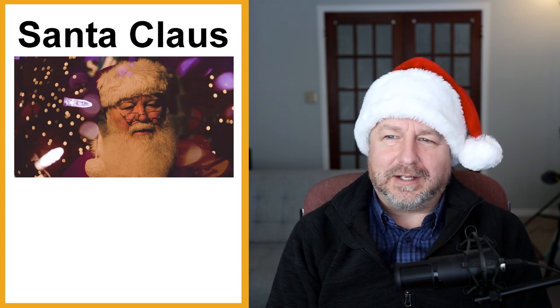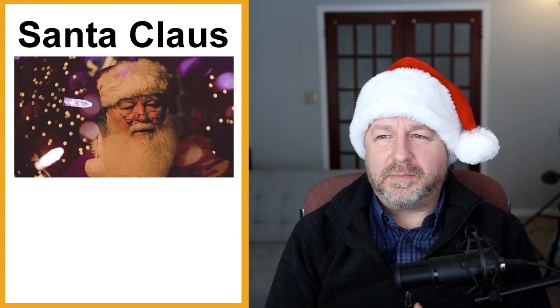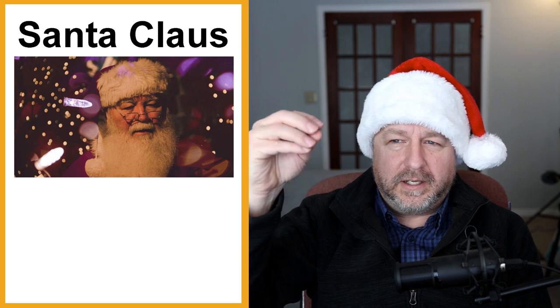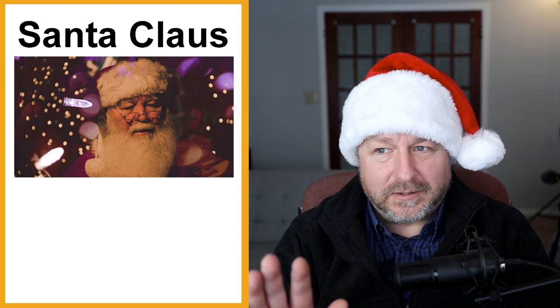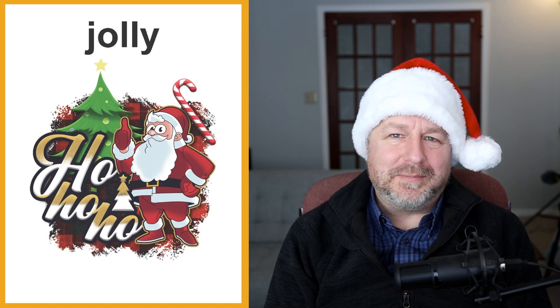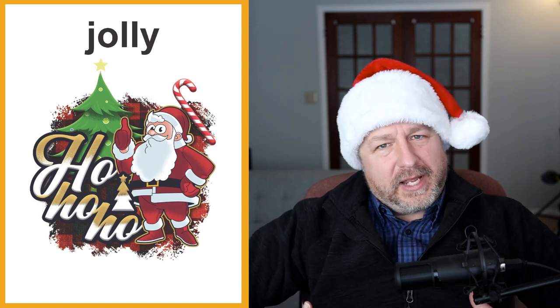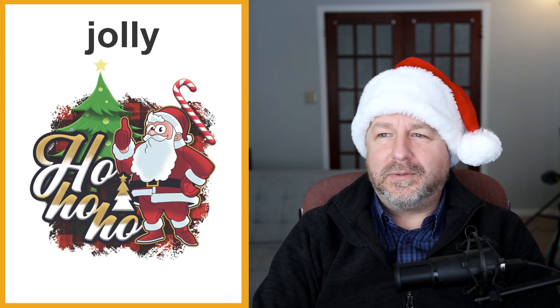Santa Claus — some people tell their children Santa Claus is real and that he comes on Christmas Eve, lands on the roof with his sleigh and reindeer, comes down the chimney, and puts presents under the tree. A lot of times kids will leave out milk and cookies for Santa Claus. One word to describe Santa is jolly — Santa says ho ho ho, Merry Christmas. He's a big man with chubby cheeks and a beard, very happy. Jolly is another word for happy, usually used to refer to people who kind of look like Santa.